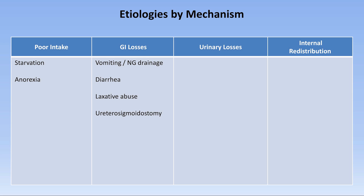Urinary losses of potassium represent the largest category of etiologies. Diuretics — specifically loop diuretics like furosemide and thiazide diuretics like HCTZ — are commonly implicated. In my personal experience, the risk of hypokalemia is particularly great when furosemide is combined with the thiazide metolazone, a regimen I would strongly advise against unless the patient is having very frequent monitoring of potassium levels.